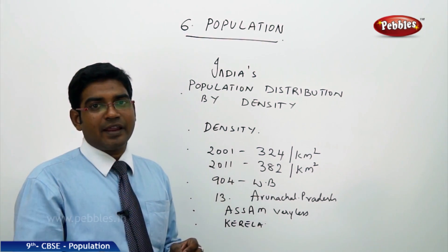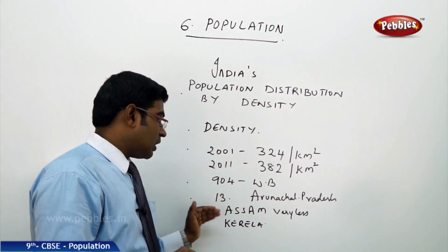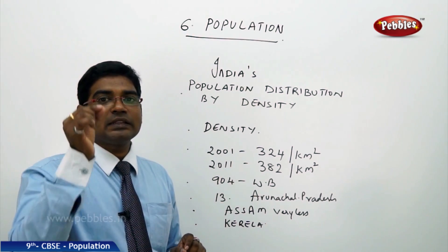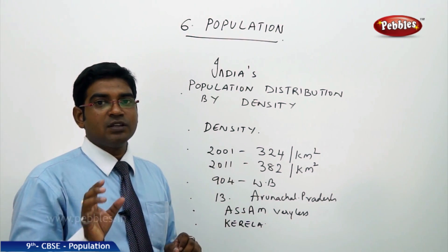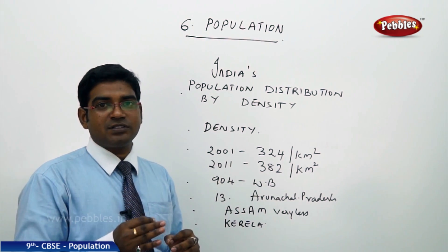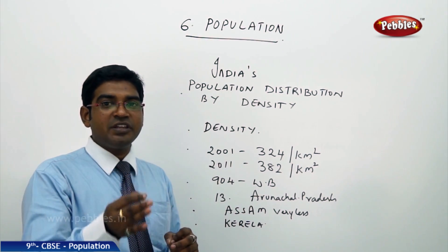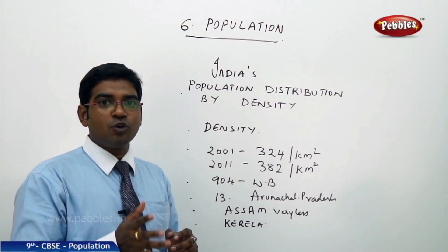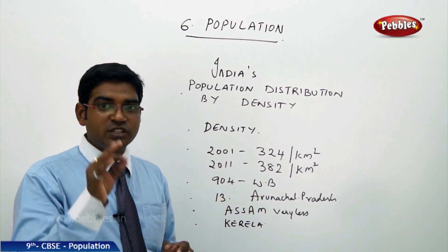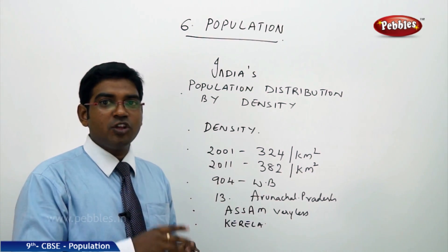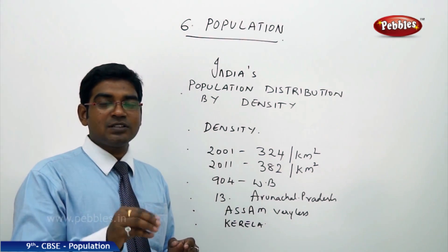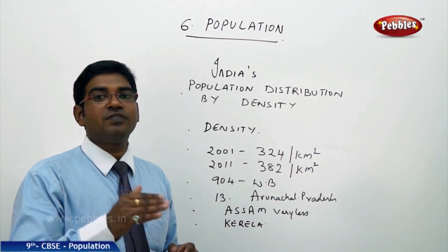On the other hand, in Arunachal Pradesh, there are only 13 people per square kilometer, which is less than 10% of the national average. So density also keeps changing — West Bengal has three times the national average, while Arunachal Pradesh has less than 10% of it.